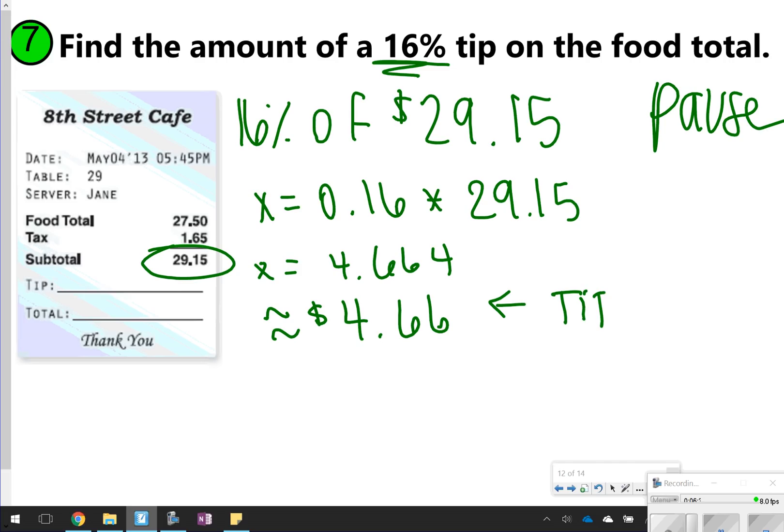And then in restaurant world, you do have to add the tip back to the total. So we would just take $29.15 and add $4.66. So $4.66 plus your 29.15 gives you $33.81. So that would be your total.